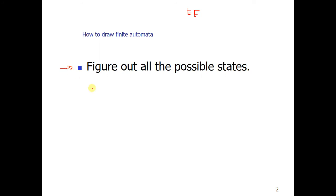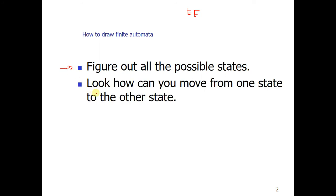Next we will see how we can have transitions from one state to another — how we can move from one state to the other. Keeping these two points in mind, you can easily draw any finite automata. So let's draw this automata for the even-even language.